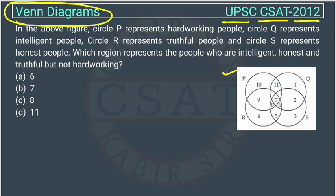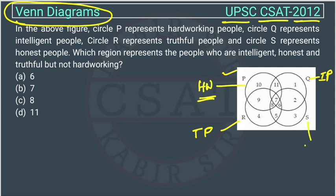Circle P represents hardworking people. Circle Q represents intelligent people. Circle R represents truthful people. Circle S represents honest people.